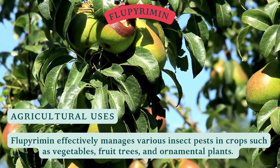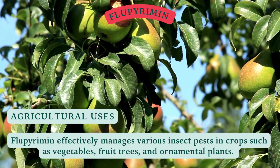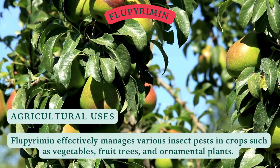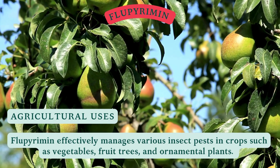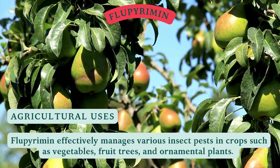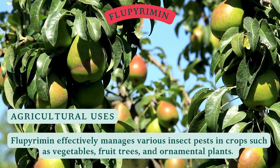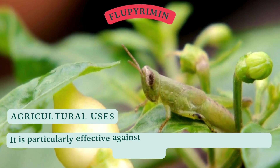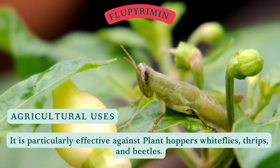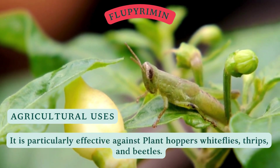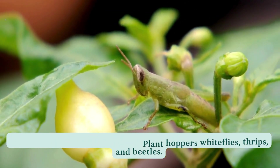Uses: Flupyrimine effectively manages various insect pests in crops such as vegetables, fruit trees, and ornamental plants. It is particularly effective against whiteflies, thrips, and beetles.